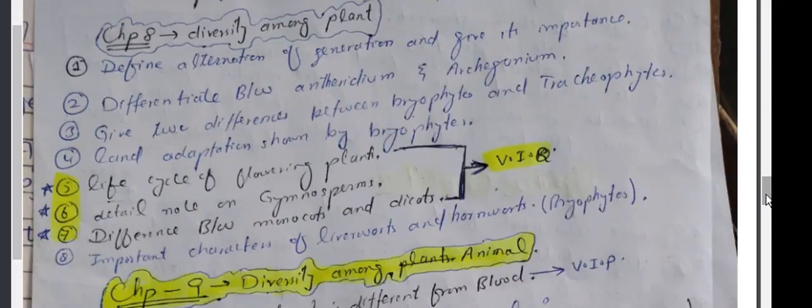Chapter 8. Define alternation of generation and give its importance. Differentiate between antheridium and archegonium. Give two differences between bryophytes and tracheophytes. Land adaptation shown by bryophytes. Life cycle of flowering plants. Detailed note on gymnosperms. Differentiate between monocots and dicots. Important characters of liverworts and hornworts.